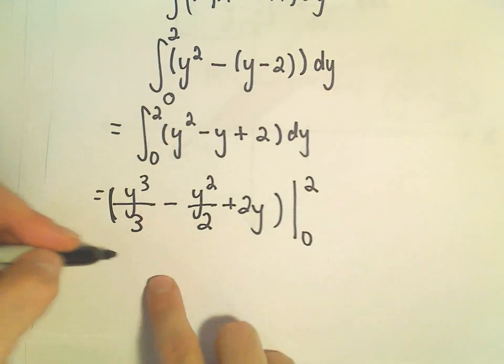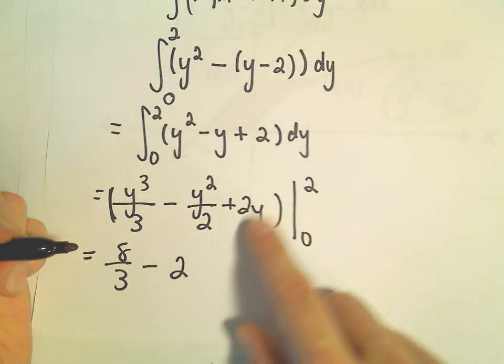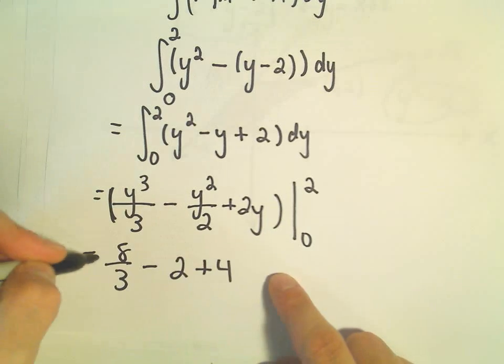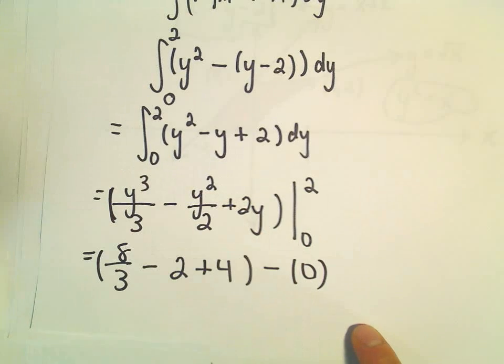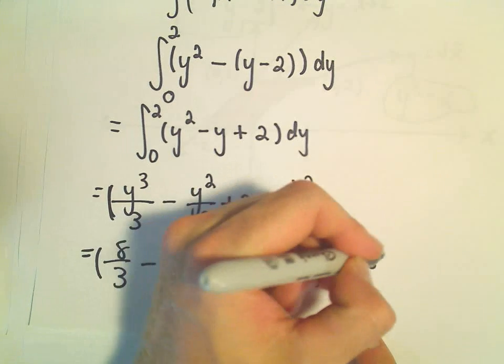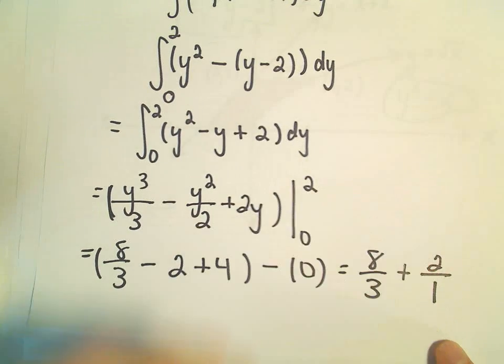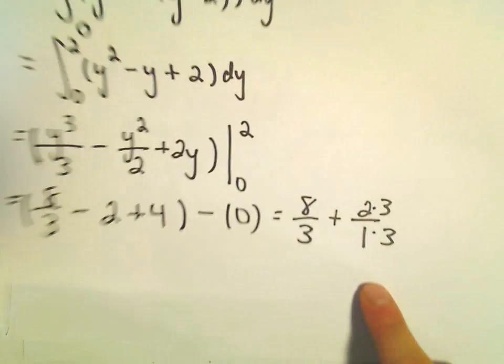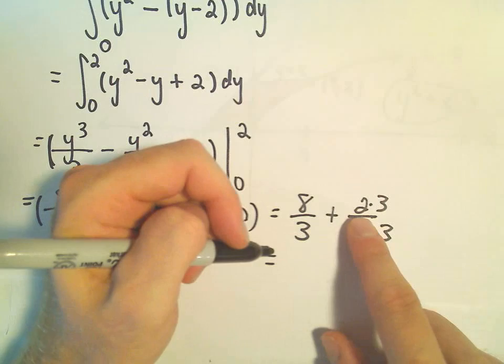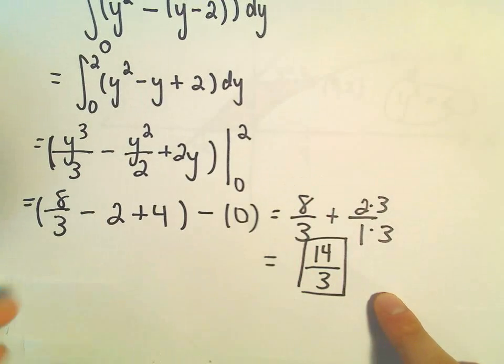So if we plug in 2, 2 cubed is 8 over 3. 2 squared is 4 over 2, so we'll get 2. 2 times 2 will give us a positive 4. The lower limit of integration, when we plug in our 0, will just be a bunch of 0s. So it looks like we're left with 8 over 3. So negative 2 plus 4 will give us positive 2 over 1. Well, we could multiply top and bottom by 3. So that looks like that would give us 8 plus 6. So 8 plus 6 would be 14 over 3. And that would be the value for our area in this case.